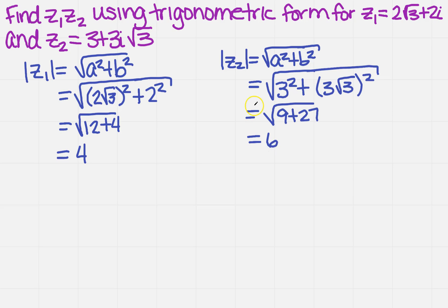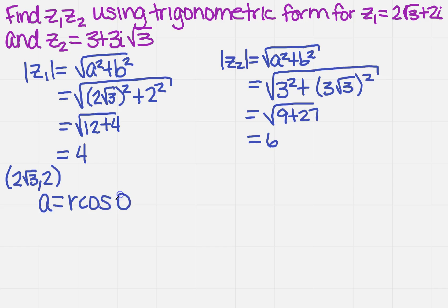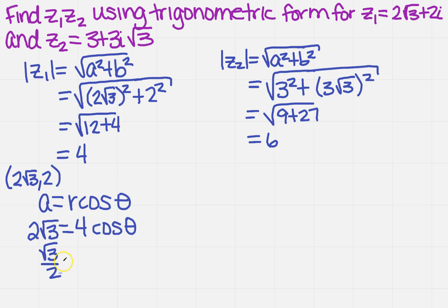So how am I going to proceed from here? I know that Z1 corresponds to the point (a, b), so I've got 2 square root of 3 comma 2. I know that a equals r cosine theta, so 2 square root of 3 equals 4 cosine theta. I get square root of 3 over 2 equals cosine of theta. For what angle do I obtain square root of 3 over 2? That's 30 degrees.